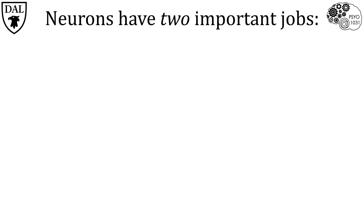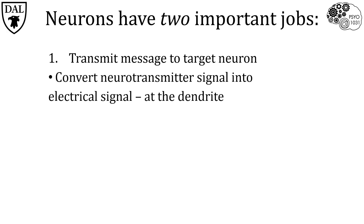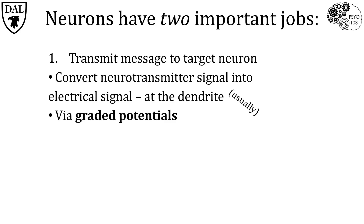The first job is to transmit a message from the pre-synaptic neuron across the synaptic cleft to the post-synaptic neuron. This is achieved by converting a chemical neurotransmitter signal in the synaptic cleft into an electrical signal in the neuron. This occurs at the location where the neuron receives synaptic inputs, which is usually in its dendrites. This is a type of signal called a graded potential.